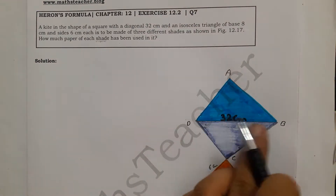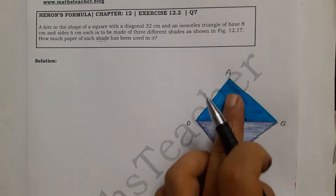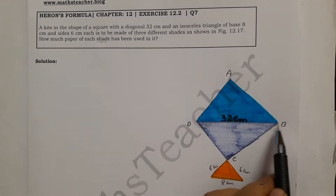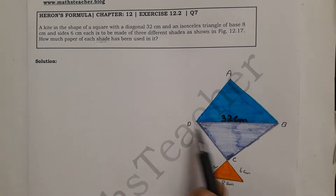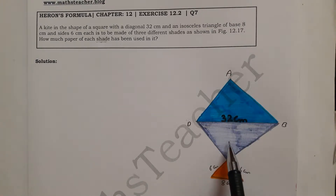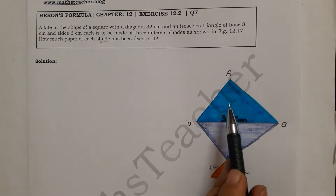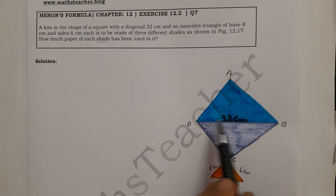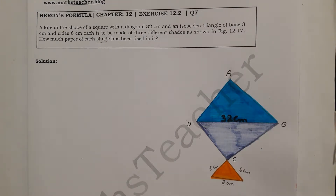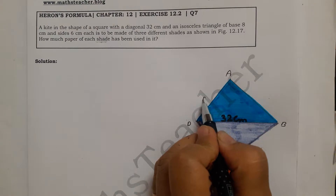The kite shape contains two different triangles. The square is divided into two triangles: triangle ABD and triangle BCD — one is sky blue and one is purple. To find the area, we first need to find the sides of the square, which are not directly given.